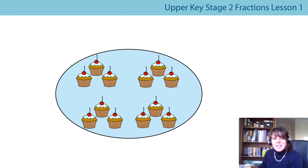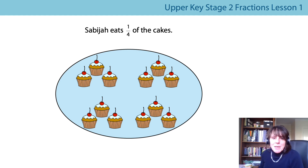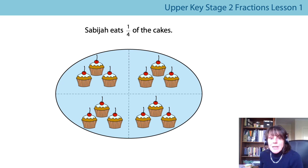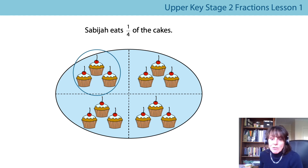This part is about understanding what the numerator and the denominator is telling us. Sabiha eats one quarter of the cake. I'm going to say a sentence and then you're going to say it with me: the whole has been divided into four equal parts — that's what the denominator is telling me. The whole has been divided into four equal parts, and one of those parts has been circled. It doesn't matter which one, as long as you were thinking of one of them. So Sabiha eats one quarter of the cakes. The whole has been divided into four equal parts. Fantastic — and one of those parts has been circled.